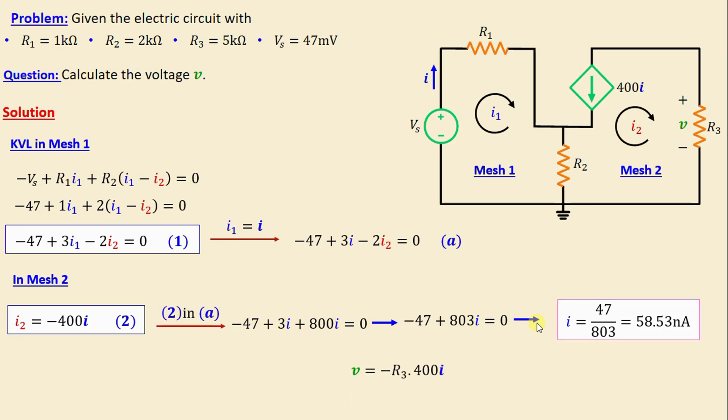Let's move on now to v. According to Ohm's law, we have v = -R3 × 400i. By replacing i and the resistor R3 with their numerical values, we obtain v = -117 millivolt.